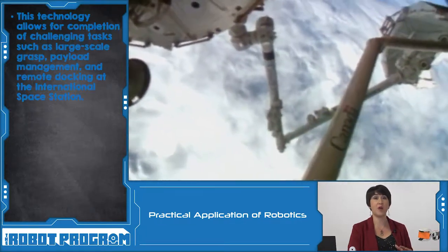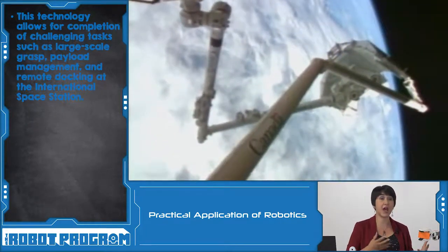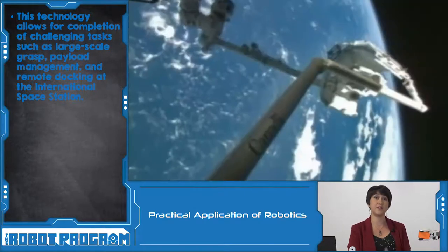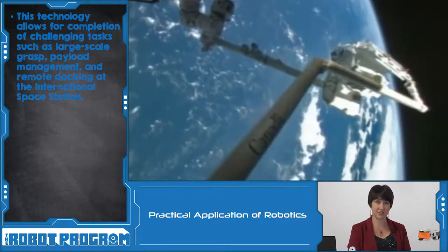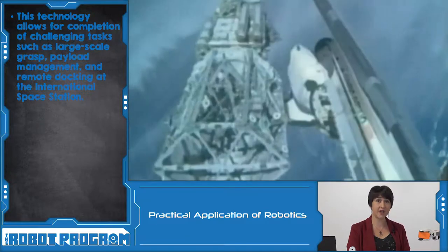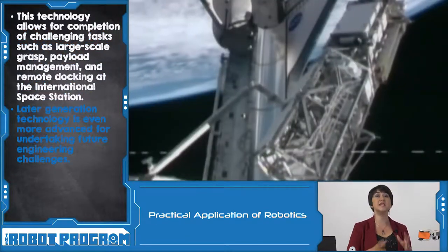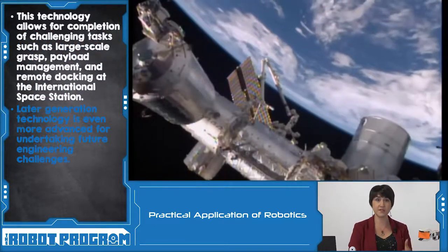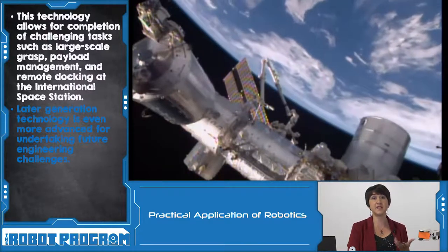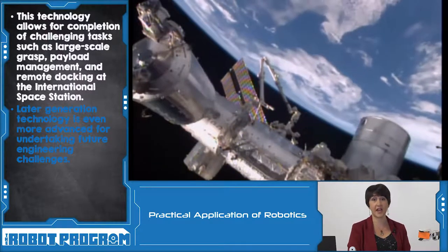The Canadarm was capable of grasping huge payloads, manipulating different items, and even docking the space shuttle when it came to the International Space Station. The original Canadarm was retired in 2011, and the second generation is even more advanced, with more sensors, more control, and more feedback to help facilitate the enormous tasks that it has to undertake.